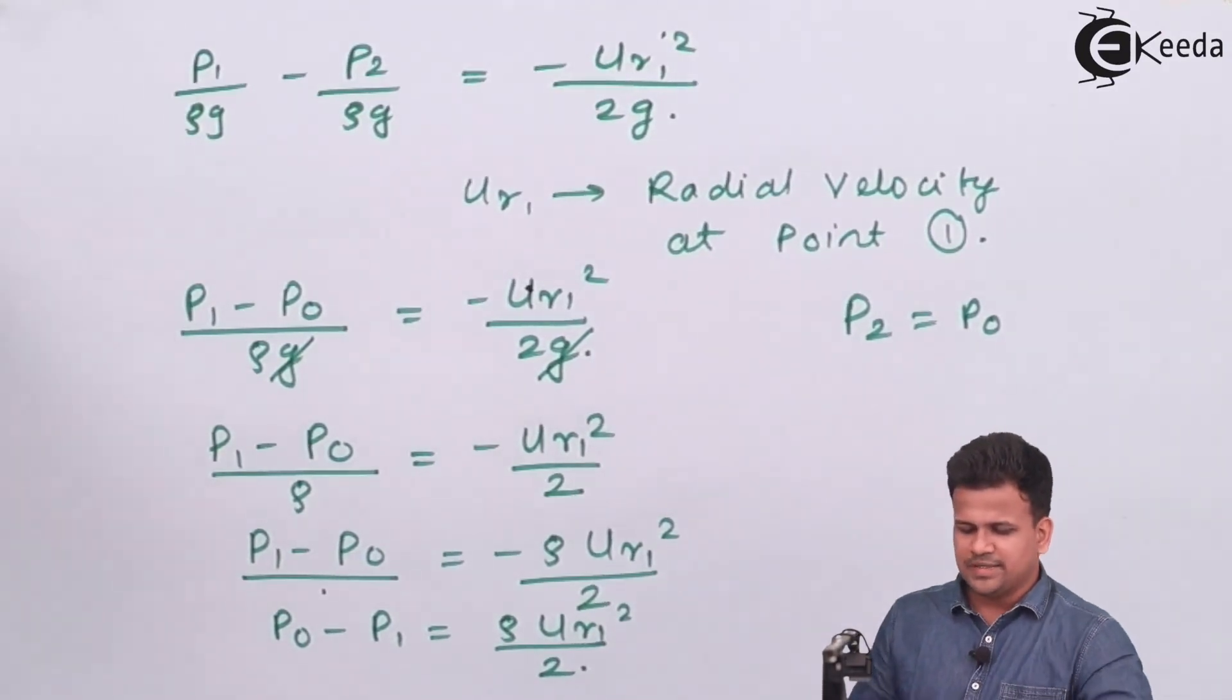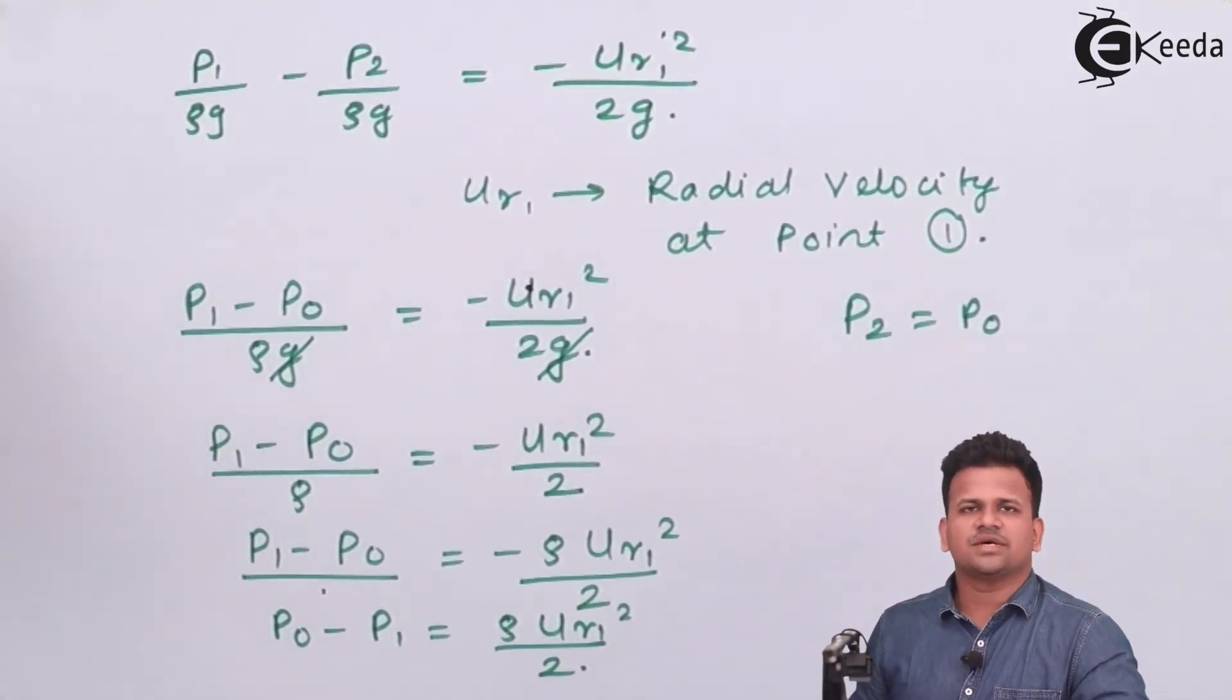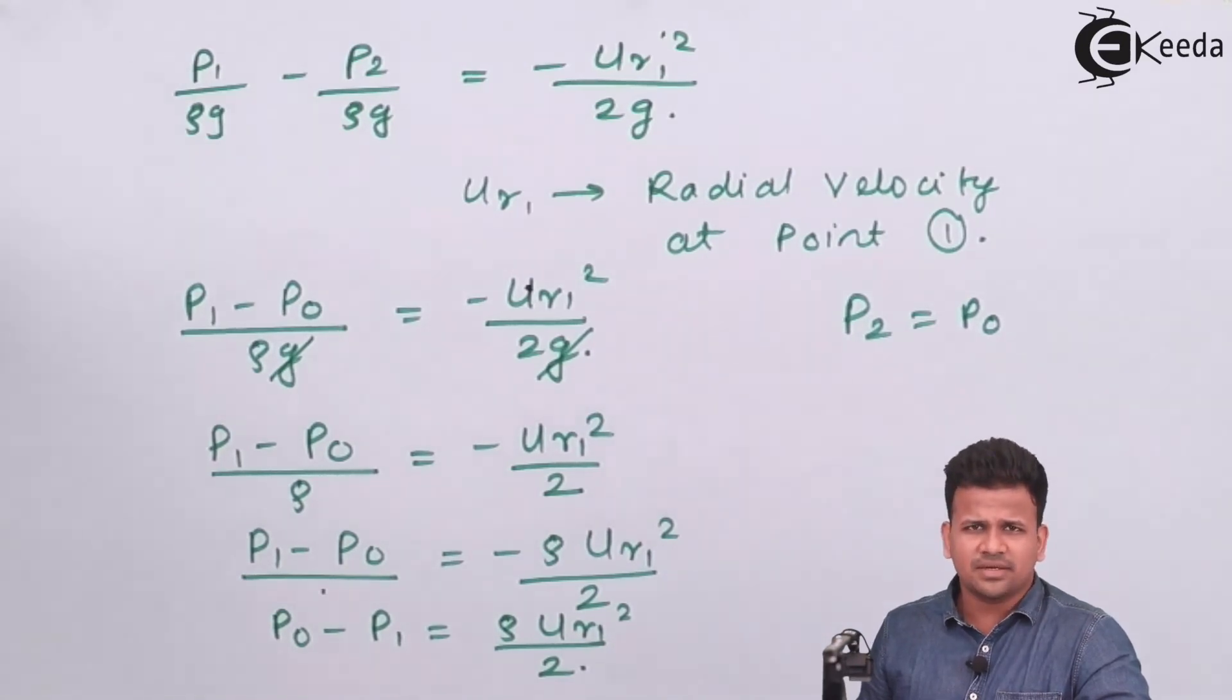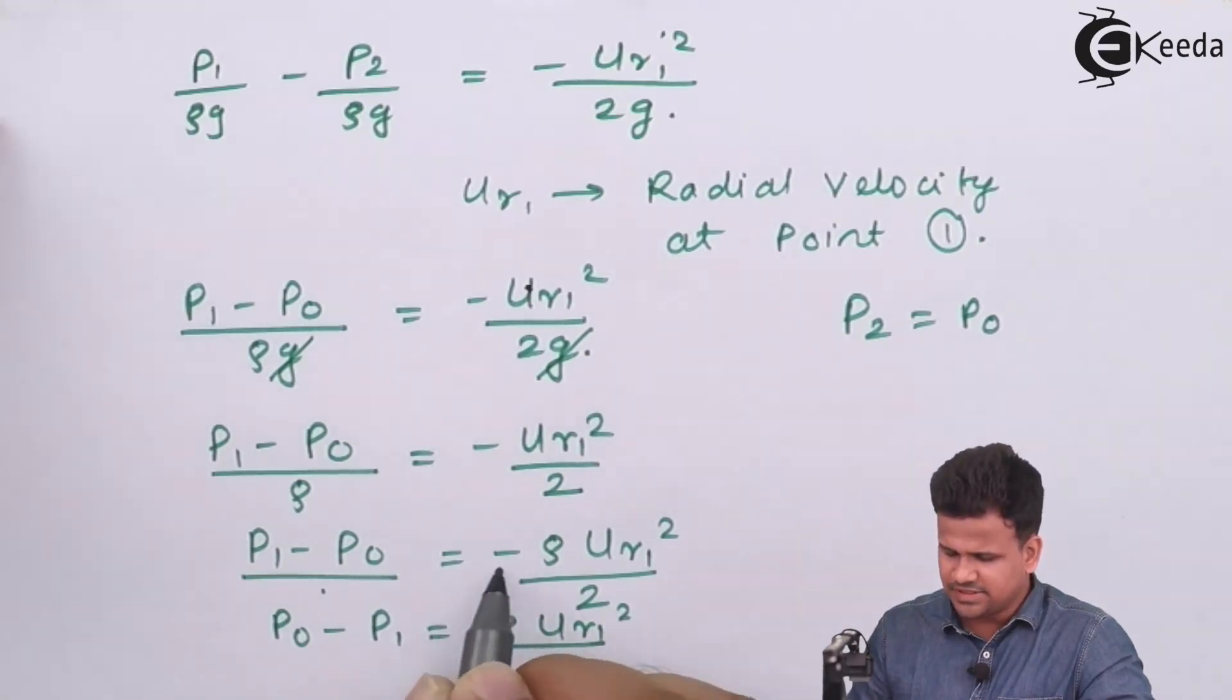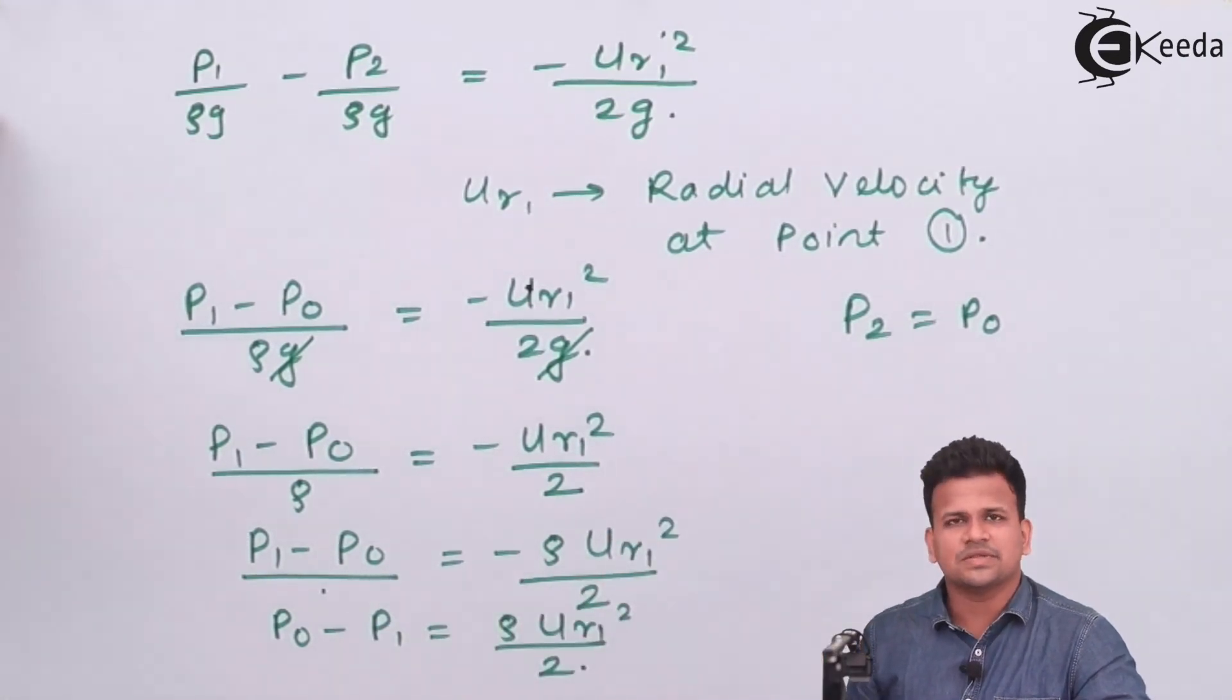The pressure energy gets converted, or rather the velocity decreases as it passes from the center to the circumference. Hence, the negative sign represents that there is a decrease in the velocity.